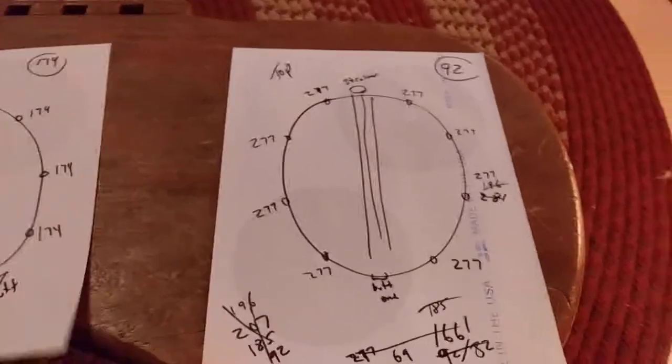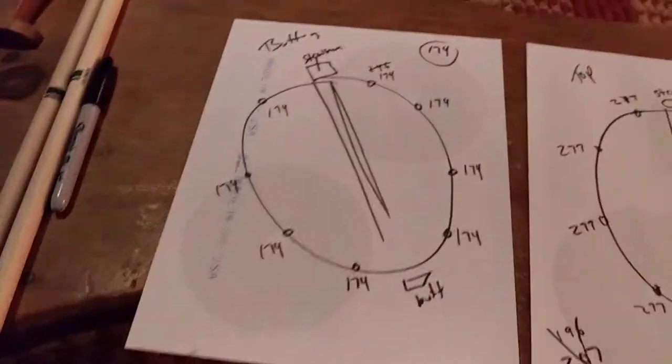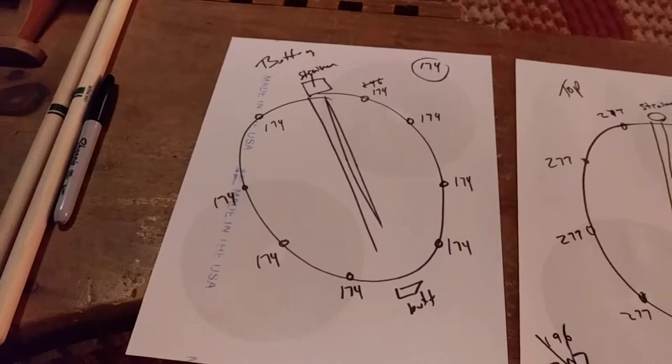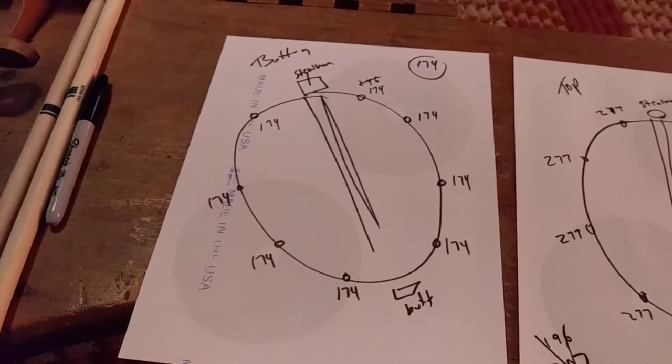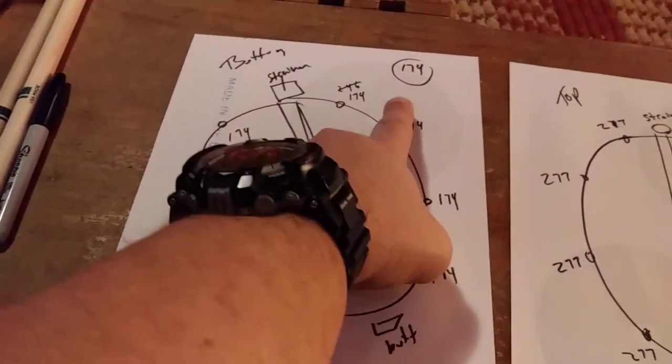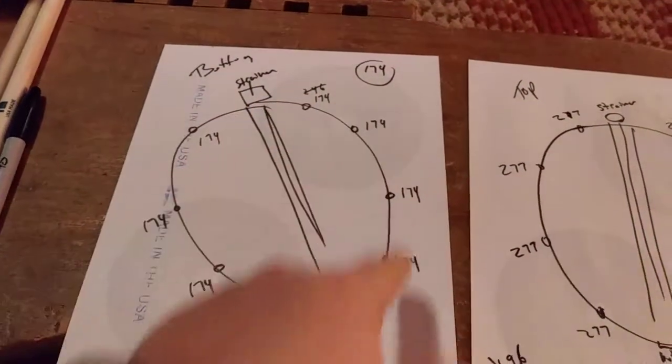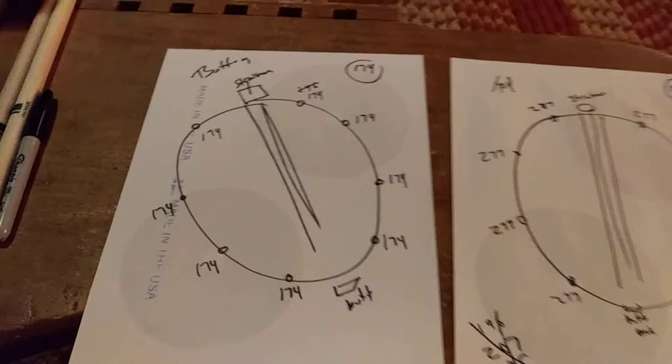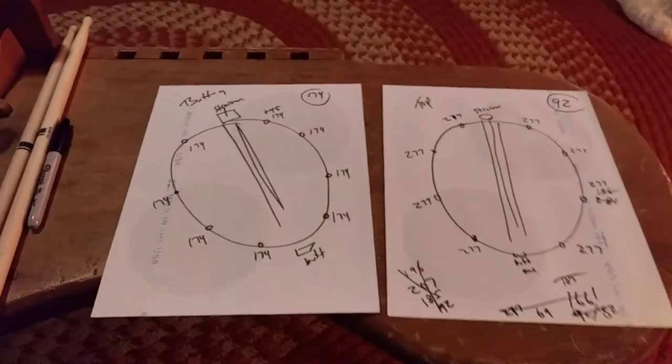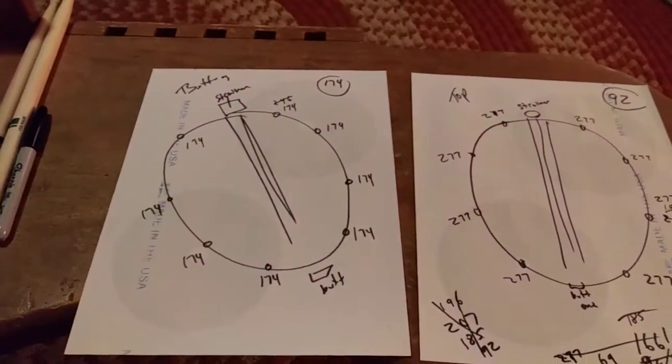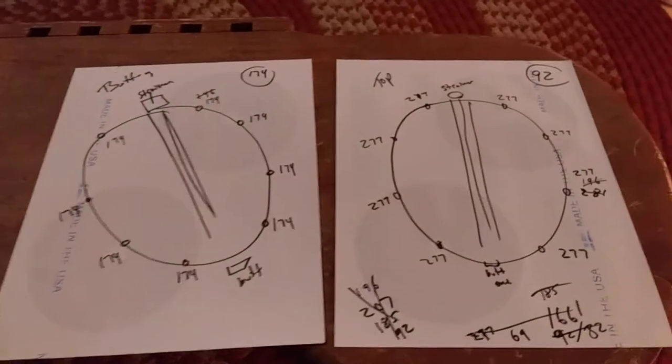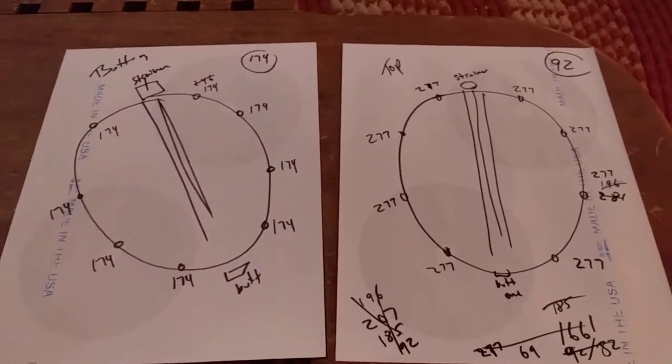Looking at the bottom head, without putting my finger on the center of the drum to deaden it, I'm getting a consistent 174. And then on each of the lugs I'm getting a consistent 174. That's on the bottom head, the resonator head.